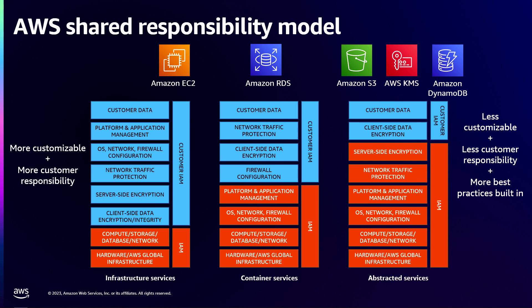In our security best practices white paper, we break this down into three different areas. Infrastructure services on the left, like EC2, where everything from the operating system and upwards is your responsibility. We take care of the physical infrastructure and the hypervisor, but everything else is on you to control — which gives you flexibility to deploy what you want, how you want it.